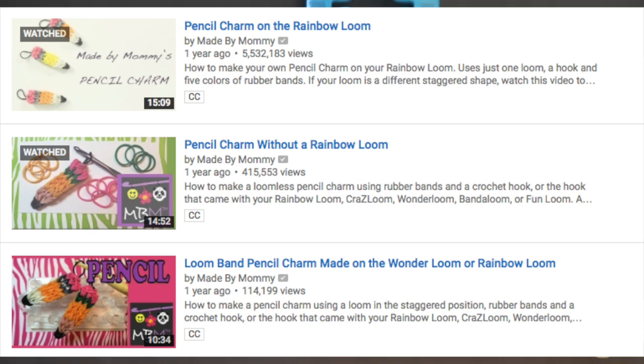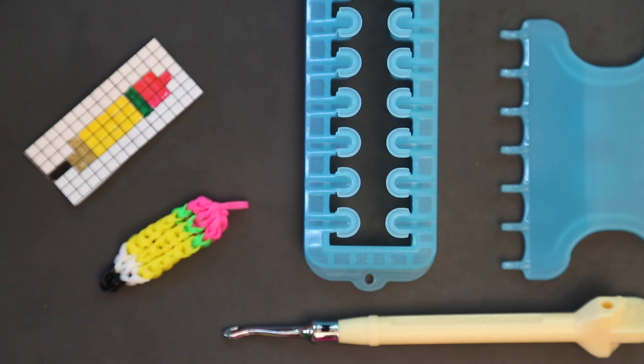If you don't yet have an alpha loom, there are instructions on both an original rainbow loom or on a fixed staggered loom, like the Luminator or the Wonder Loom. I'll post those links both here and in the description below.